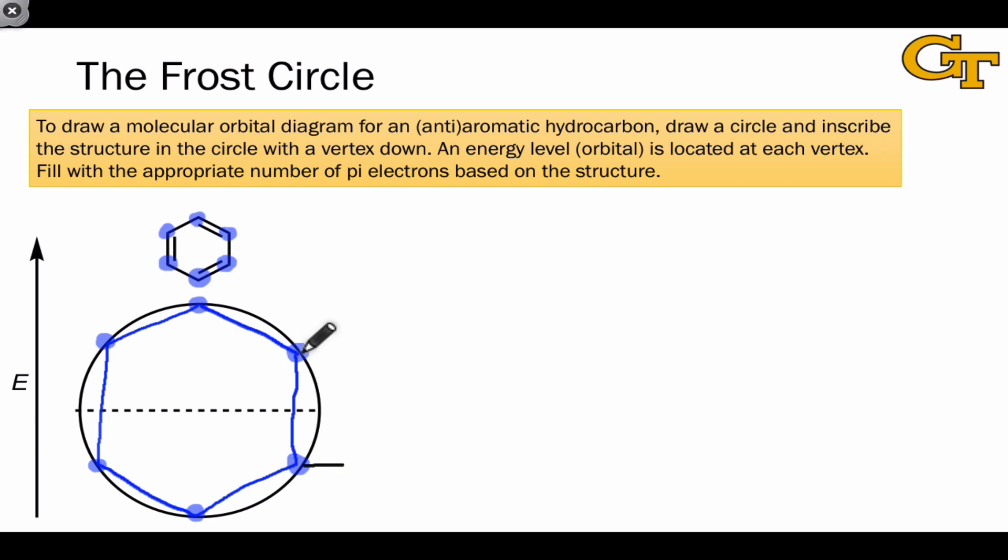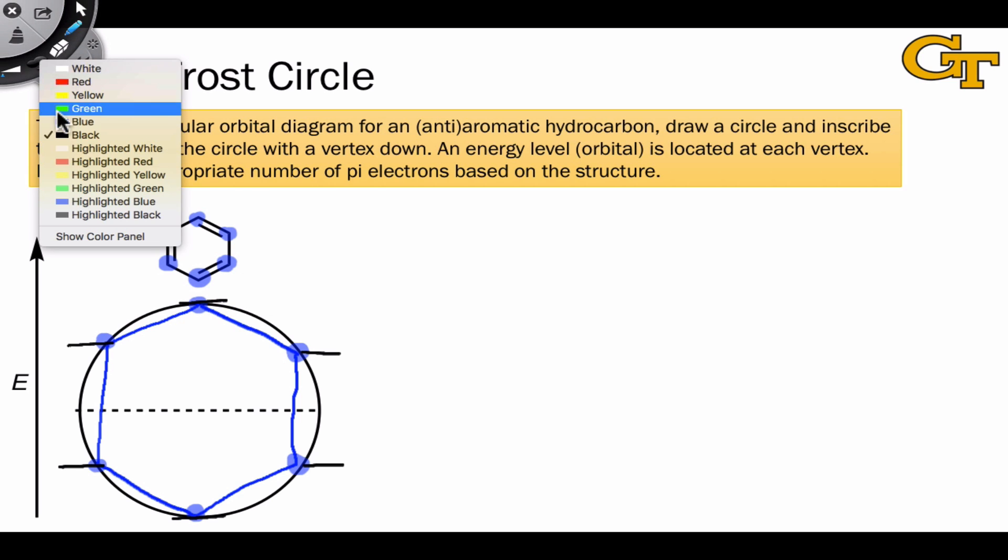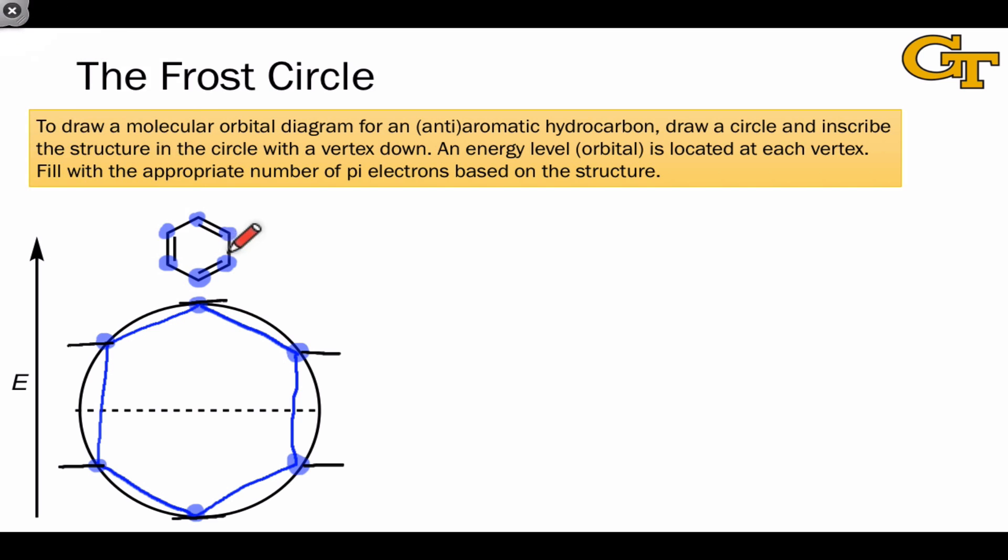To place the levels, we just draw horizontal lines as we would on any orbital energy diagram, and then the last thing we want to do is fill with electrons based on the number of pi electrons implied by the molecular structure. Benzene has six, and so we're going to start at the bottom in accordance with the Aufbau principle and fill up from there.